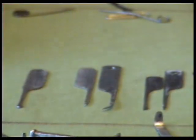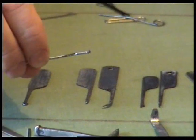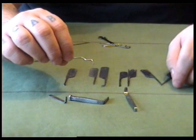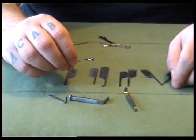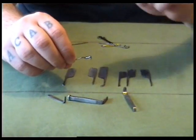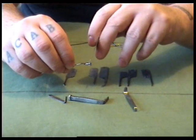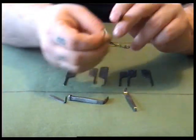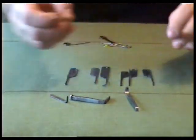They are used for putting in the actual lock. When you pick a lock, you put the tension tool into the keyhole at the bottom and twist it slightly. And then you put the picks in and you push the pins up. And that is actually how you pick a lock. And then eventually it will spin round.